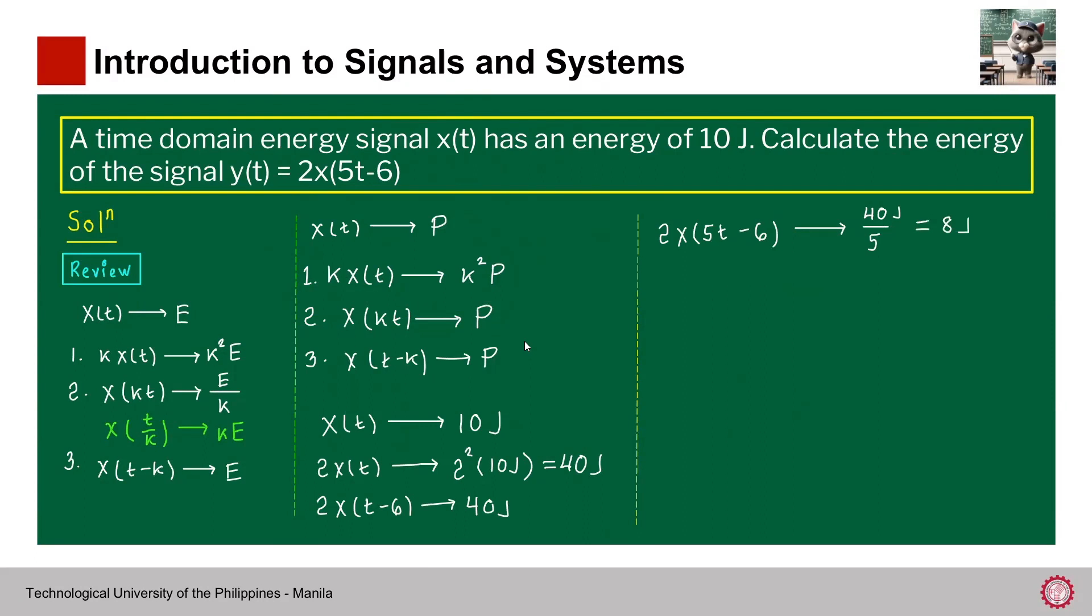So the result simply is 8 joules. Now, 2x(5t - 6), basically this is our y(t). And therefore, the energy of y(t) is given by 8 joules. And 8 joules is the answer for the problem in introduction to signals and systems.